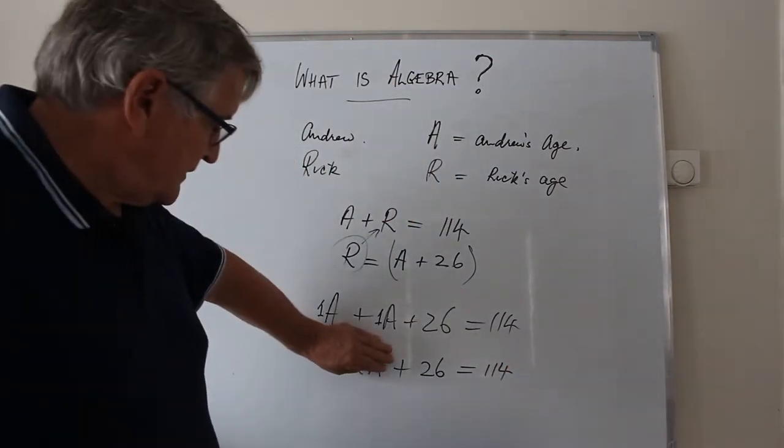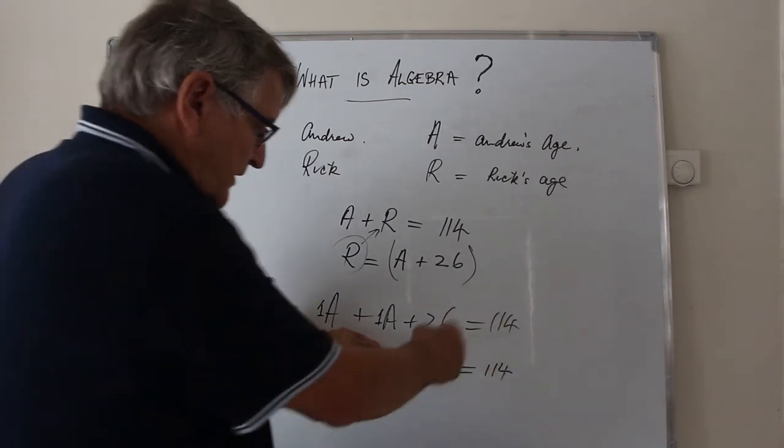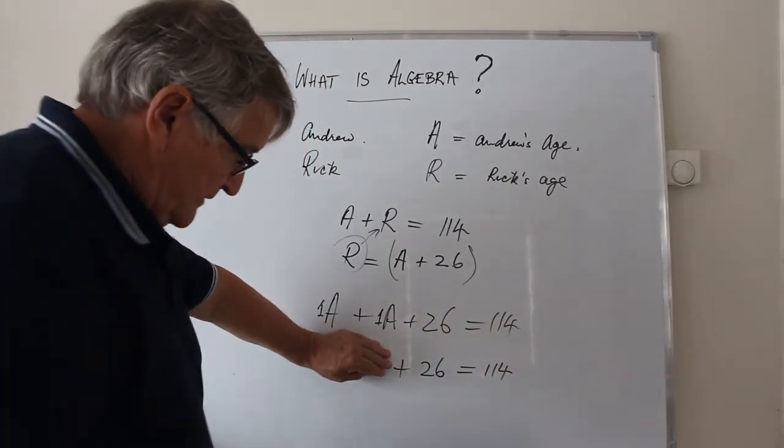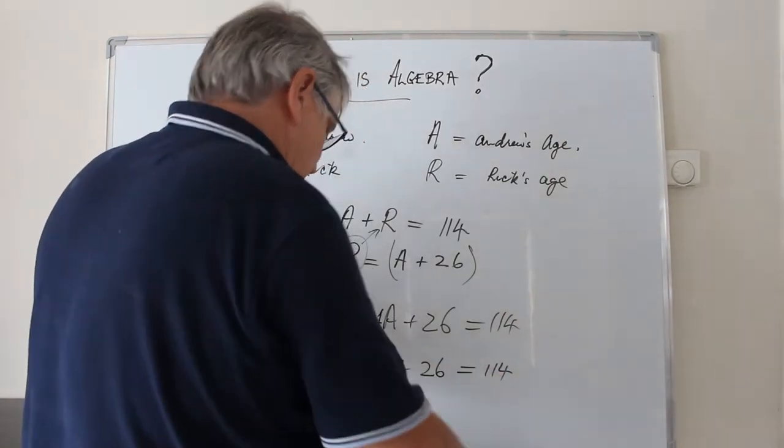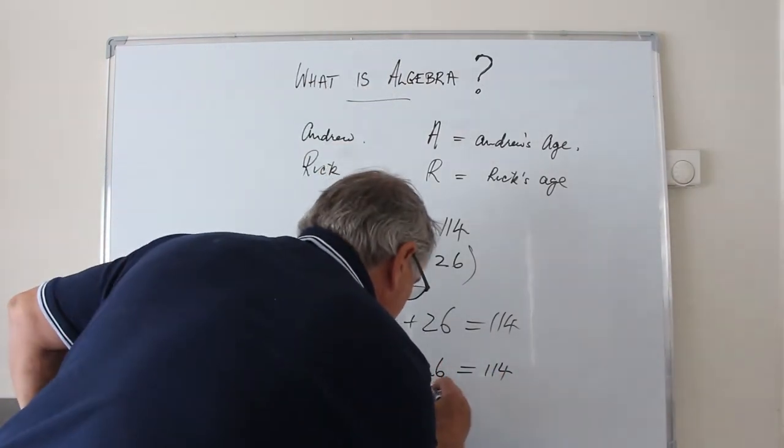So what I'm saying is what number plus 26 is 114. So clearly, to find that, we're going to subtract 26 from 114. So what we're doing is this.